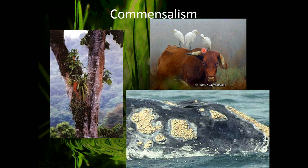Commensalism is when one species benefits and the other is neither helped nor harmed. For example, barnacles on a whale — the barnacles benefit by being taken around the ocean to get more food, but it does not hurt or benefit the whale to have barnacles on its skin. Orchids put their roots into puddles in the branches of trees; this doesn't hurt or benefit the tree, but the orchid benefits by living high above the canopy and getting water. Birds around cattle get the benefit of food, while the cattle is neither helped nor harmed by the birds.